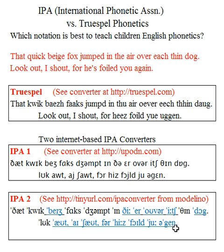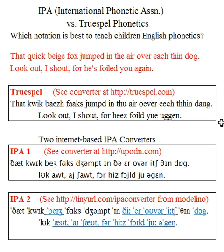Not all IPAs are the same. While True Spell is typable and writable by anybody very easily using just letters of the alphabet, IPA is very hard to type and has really thwarted typing phonetics. The best way to go is True Spell — you can read phonetics and you can write phonetics.